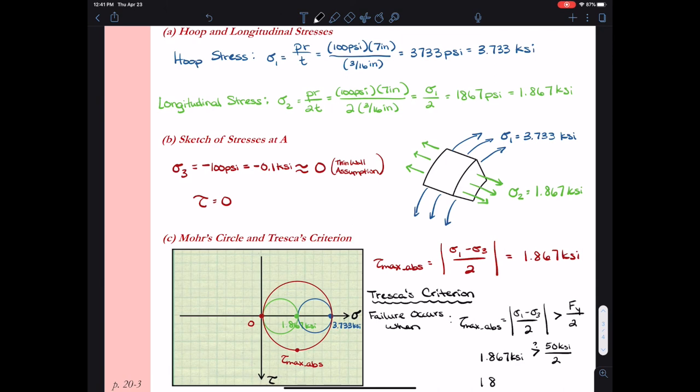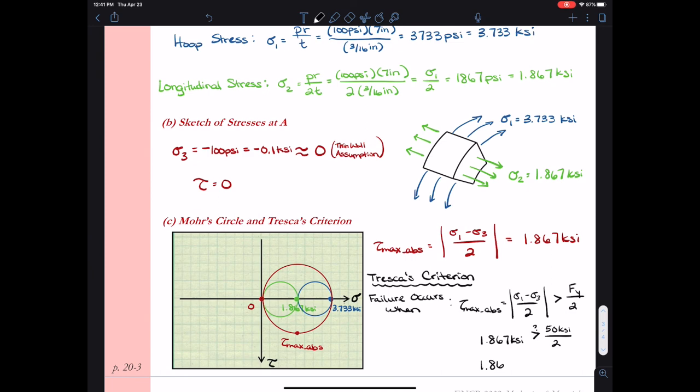So I asked the question is 1.867 ksi greater than 25 ksi? And hopefully you see that the answer is no. So since the answer is no, then we do not predict failure to occur.